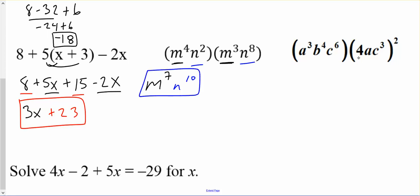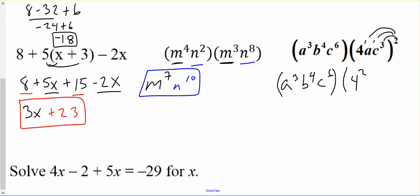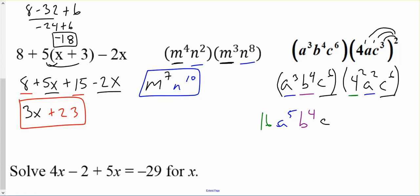Our next one: over here on the right we've got a power, our base, 2 powers — these are little invisible 1's — and we're going to take that to the 2nd power, which means we distribute the exponent to the other exponents. So I'll rewrite: a cubed, b to the 4th, c to the 6th, times 4 squared, a squared, c to the 6th, because 3 times 2 makes 6. Now combining: 4 squared is 16, a cubed and a squared make a to the 5th, b to the 4th stays b to the 4th, and c to the 6th and c to the 6th make c to the 12th.